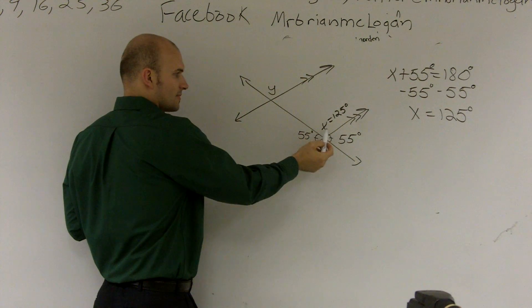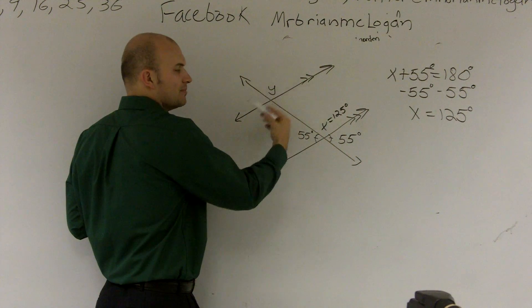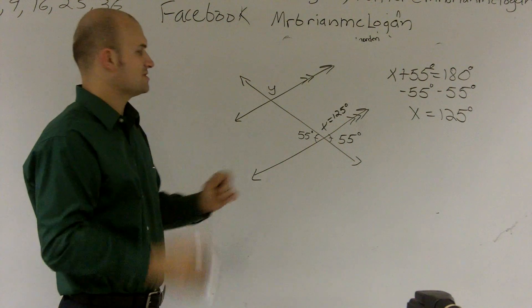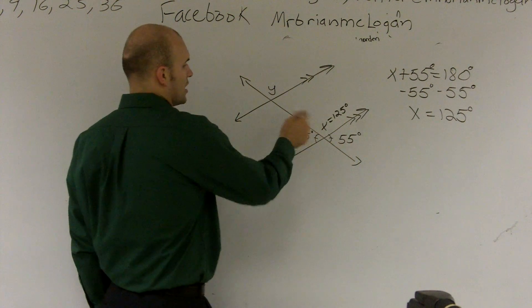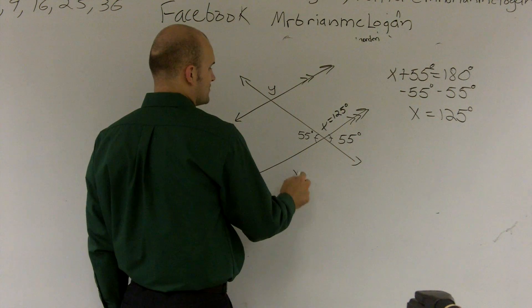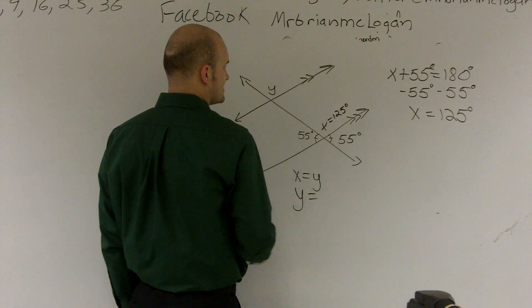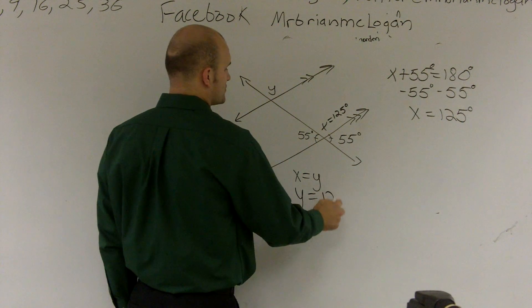They're both above a parallel line and they're both to the right of the transversal. So since they're in the exact same position, these are what we call corresponding angles. So we can say x is equal to y, so therefore, y is equal to 125 degrees.